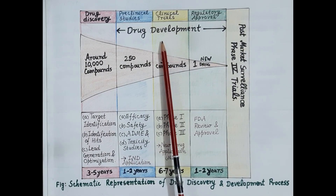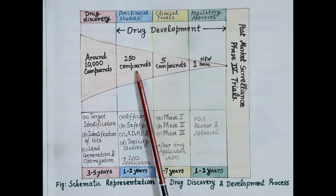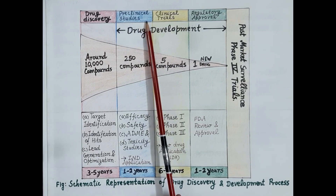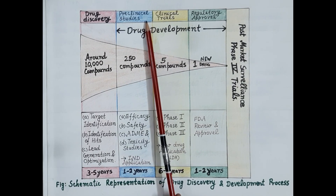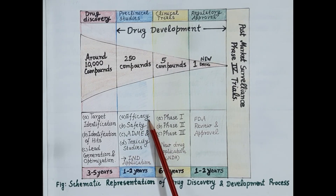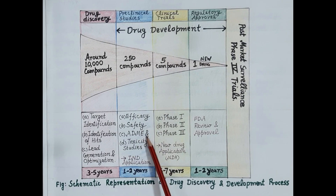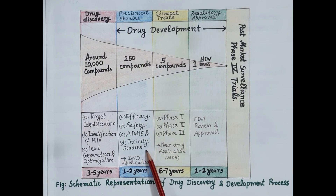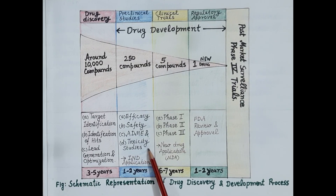During drug development, the 250 compounds derived from the leads are screened and evaluated first in animals in pre-clinical studies. Pharmacological studies are performed on animals to determine safety and efficacy of all 250 compounds. Pharmacokinetic studies evaluate the ADME profile — administration, distribution, metabolism, and excretion — of all 250 compounds in animals, while toxicity studies determine the safe dose and dose range.